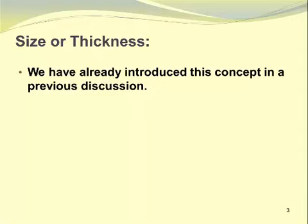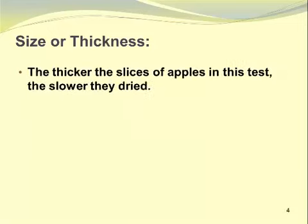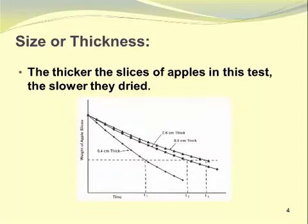We have already introduced the concept of size or thickness in a previous discussion. However, it is something that should be confirmed with experimental data. The thicker the slices of apples in this test, the slower they dried. Here we see a graph where we're plotting the weight of the apple slices against time. We have three different thicknesses: 0.8 cm thick (8 mm), 0.6 cm thick (6 mm), and 0.4 cm (4 mm) thick.